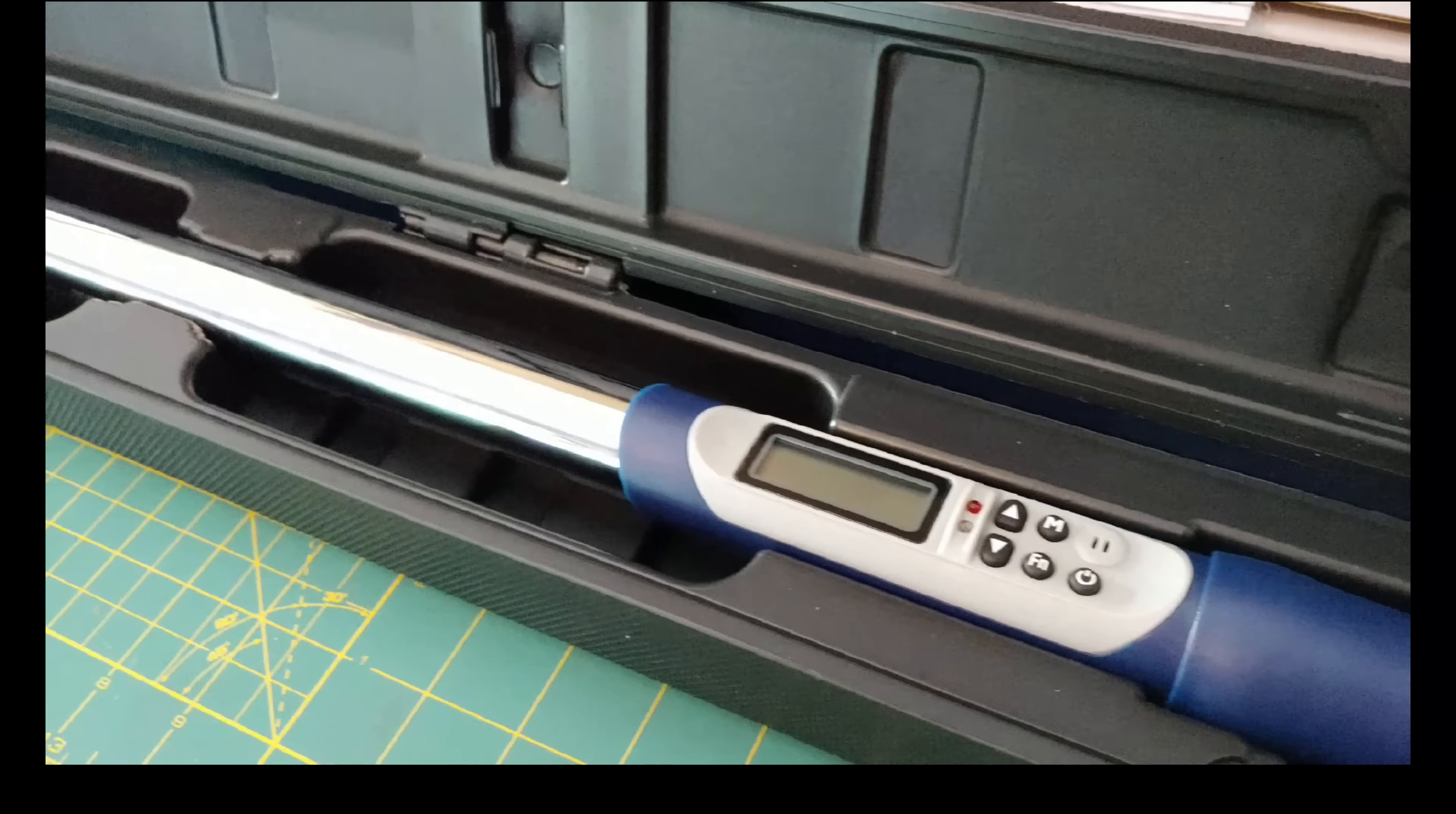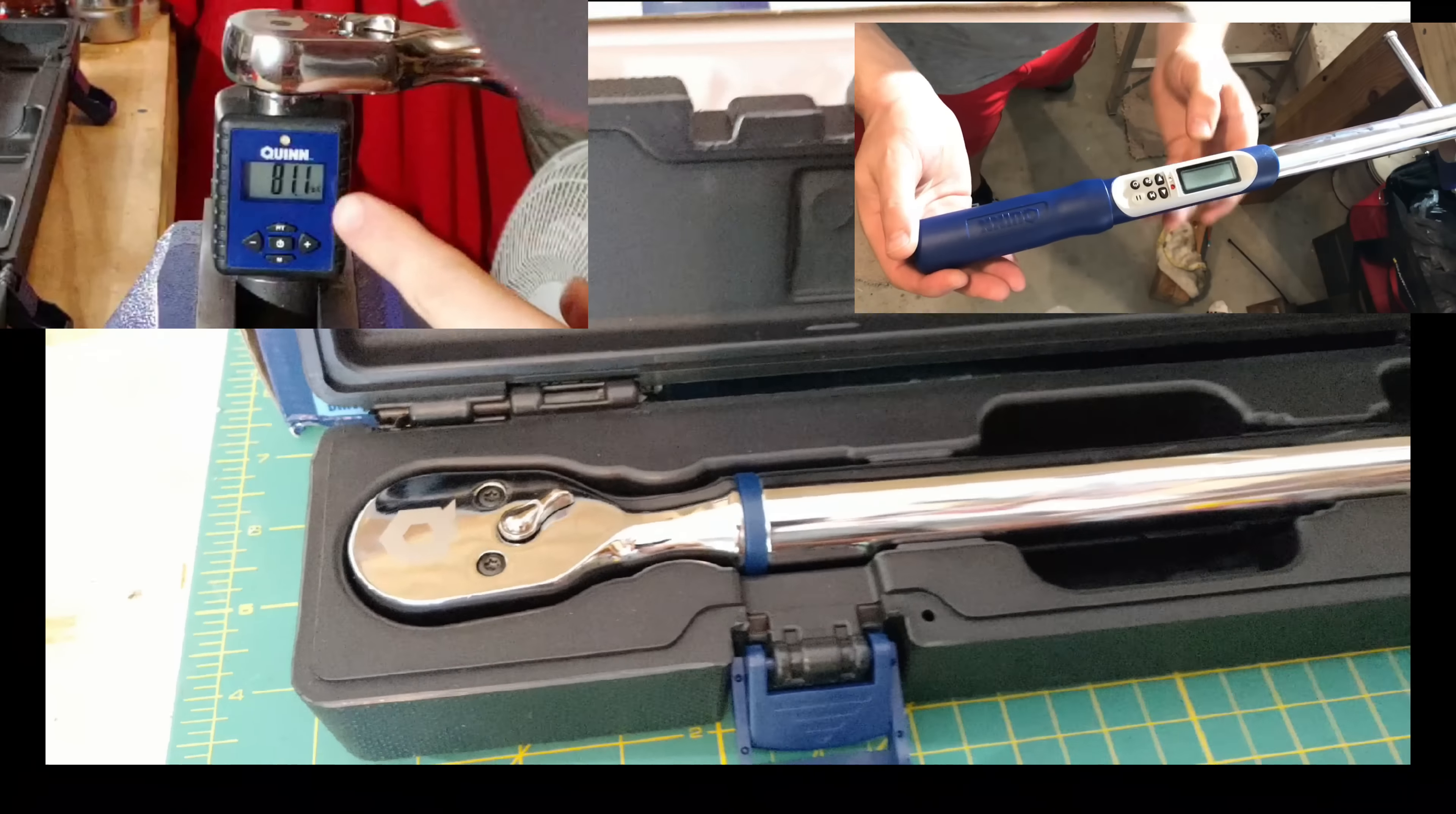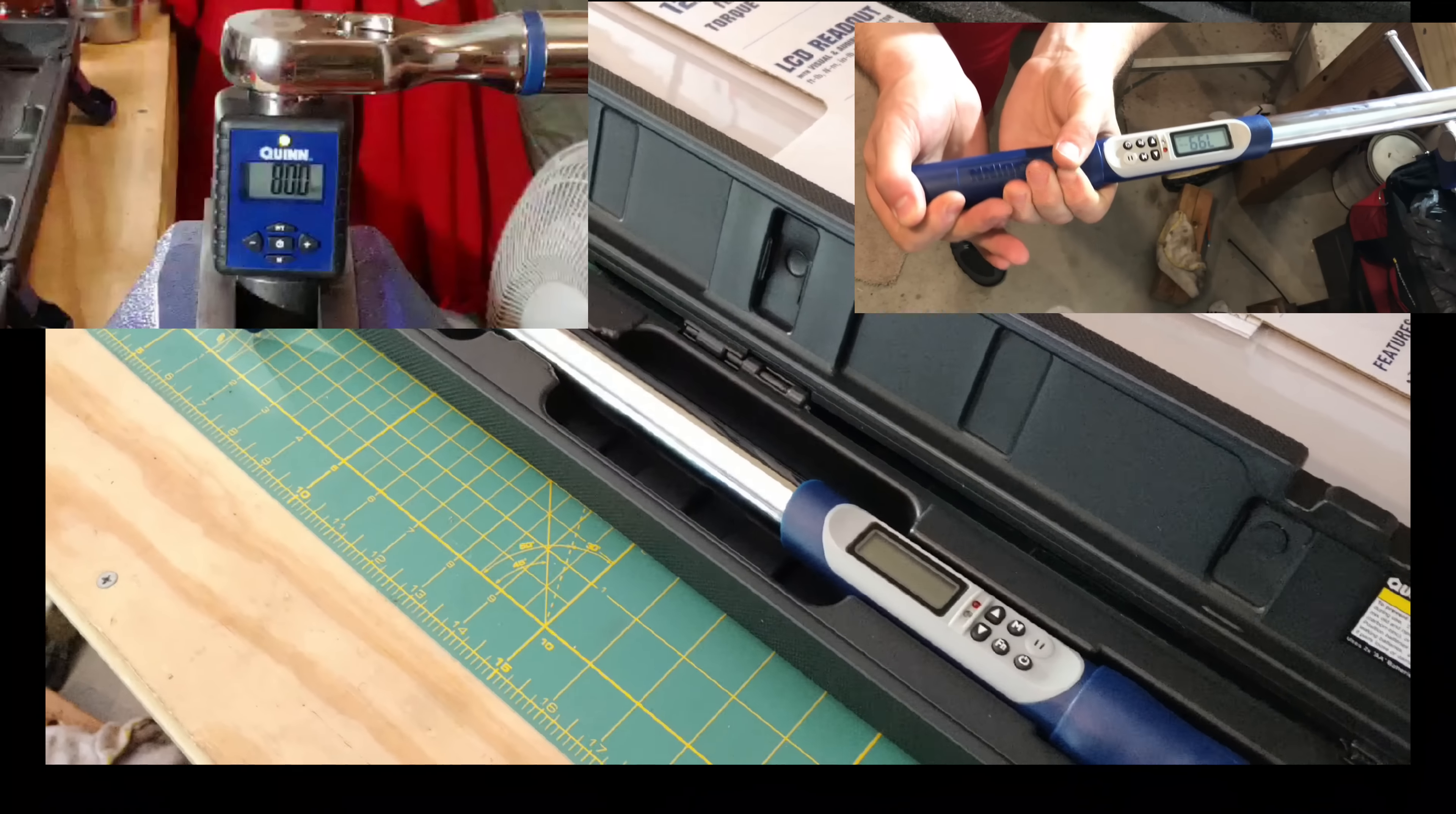This torque wrench features a 72 tooth ratcheting mechanism that allows for a five degree arc swing. It ranges from 12.5 foot pounds all the way up to 250 foot pounds. It gives you nine preset torque settings to allow flexibility and speed to change between applications if you need it.